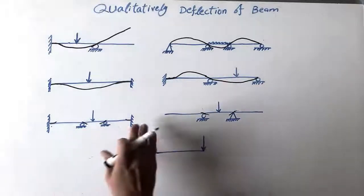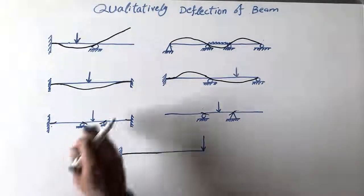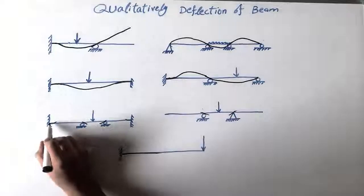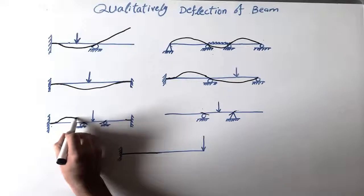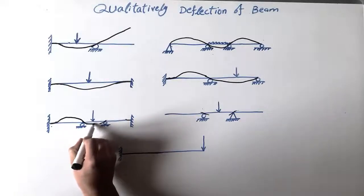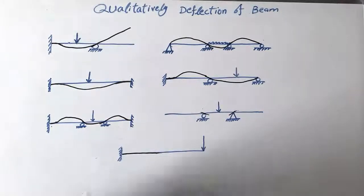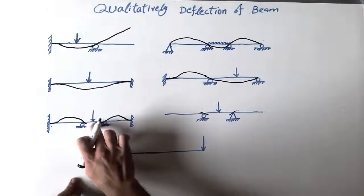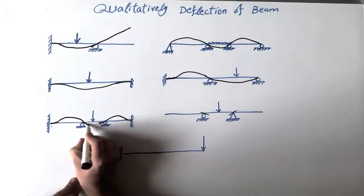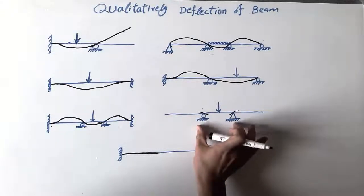Now we have a beam where both supports are fixed and we have two rollers in the middle with a point load. The deflection shape will be straight at the fixed ends, then make a curve upward, then down again, and end at the other fixed support. I just need to draw the curve properly.